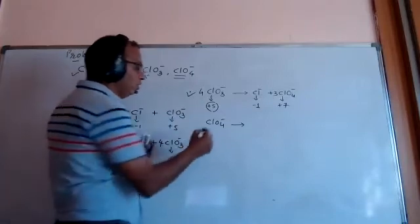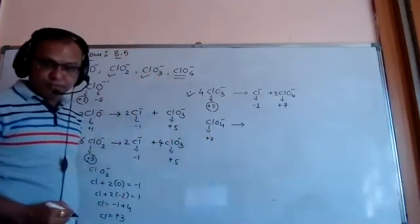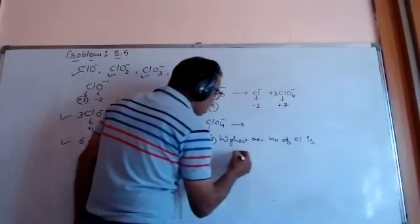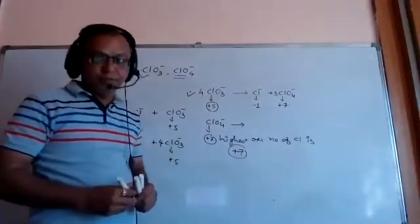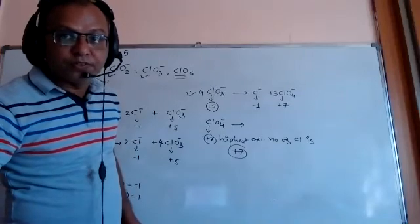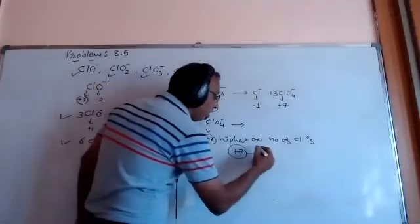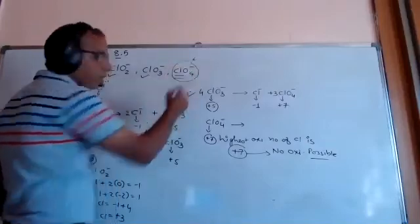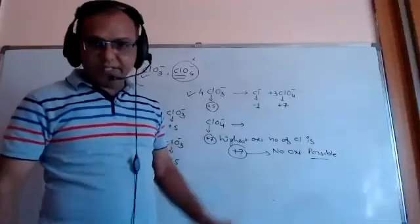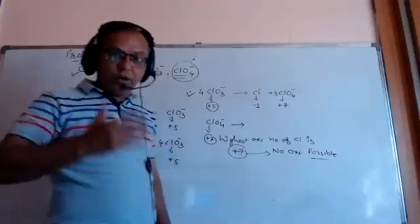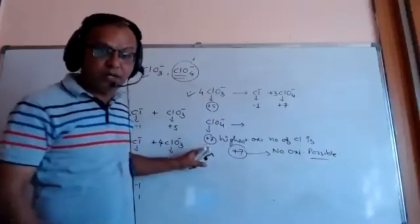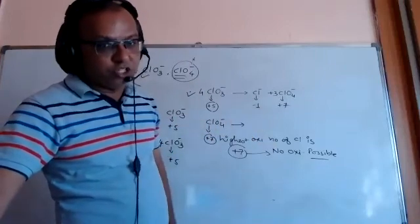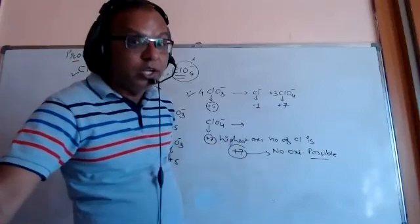The last species is ClO₄⁻. In this case, the oxidation number of chlorine is plus seven, which is the highest possible oxidation number for chlorine. After plus seven, chlorine cannot be further oxidized to plus eight or higher. Therefore, no oxidation is possible, and ClO₄⁻ cannot undergo disproportionation reaction. The maximum oxidation number of chlorine is plus seven, so it cannot be oxidized further.